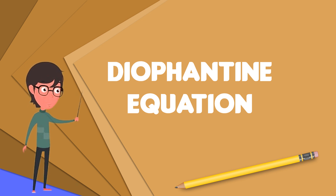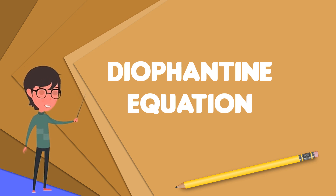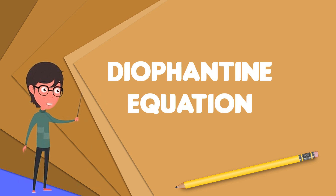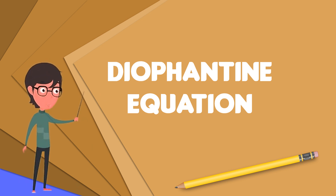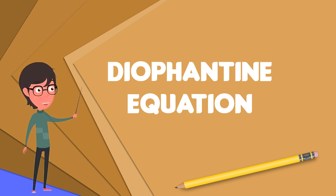The word Diophantine refers to the Hellenistic mathematician of the third century, Diophantus of Alexandria, who made a study of such equations and was one of the first mathematicians to introduce symbolism into algebra.